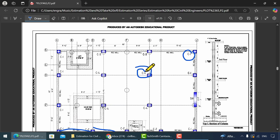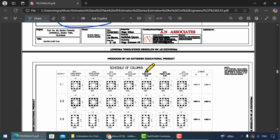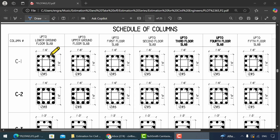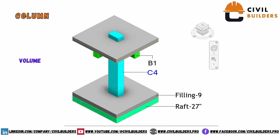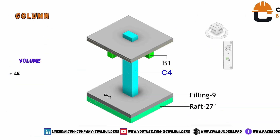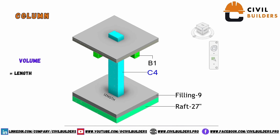To check the length and width of a column, we need to review the section details. The length and width of column C1 is 18 inches each. To find the column volume, we need to multiply length, width, and depth. As length and width are taken from the cross section, for the depth we need to refer to the section details.